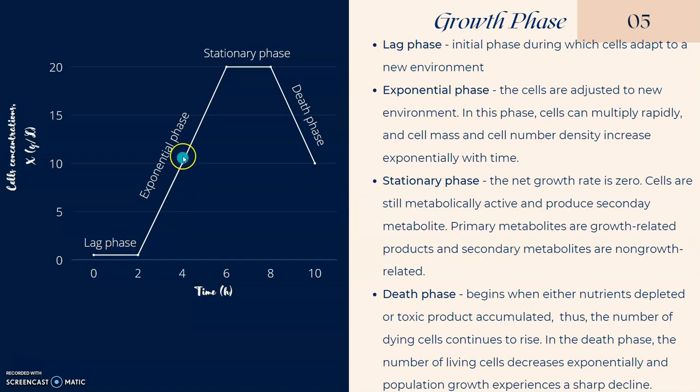Following the lag phase is exponential phase. The cells are adjusted to the new environment and in this phase, cells multiply rapidly. The cell mass and cell number density increase exponentially with time.